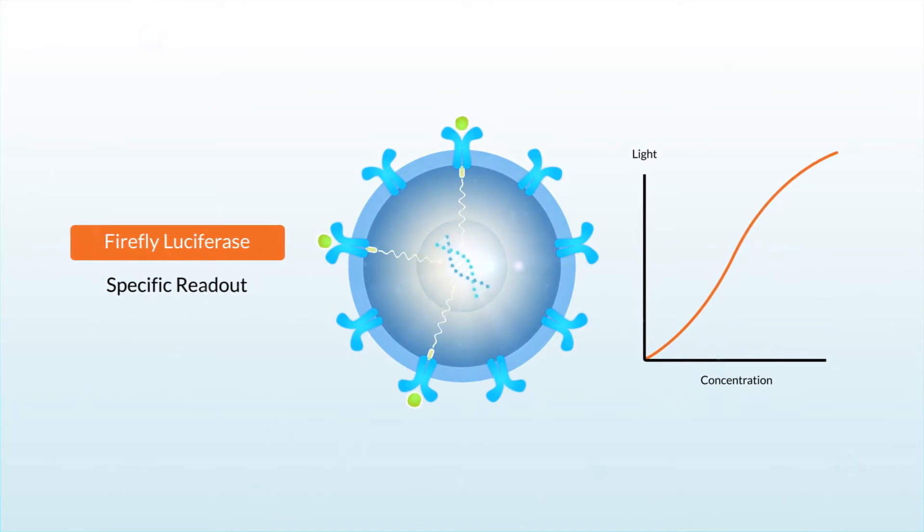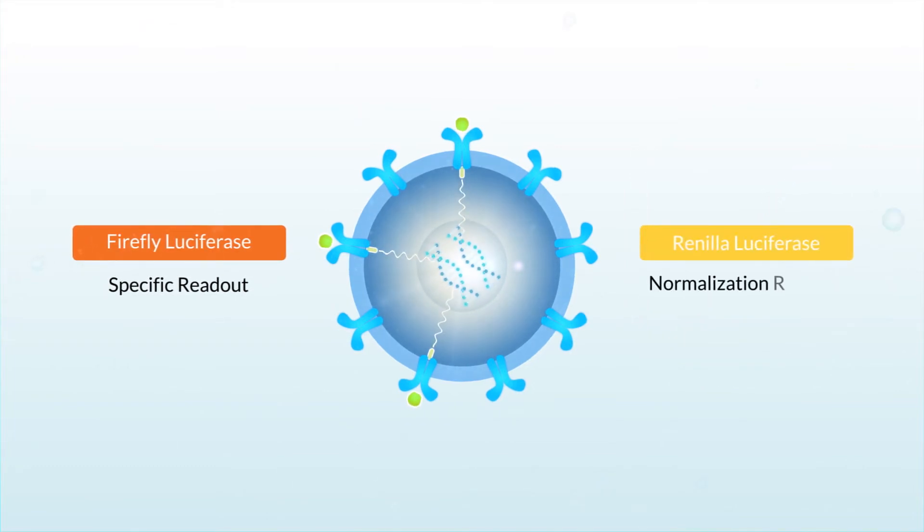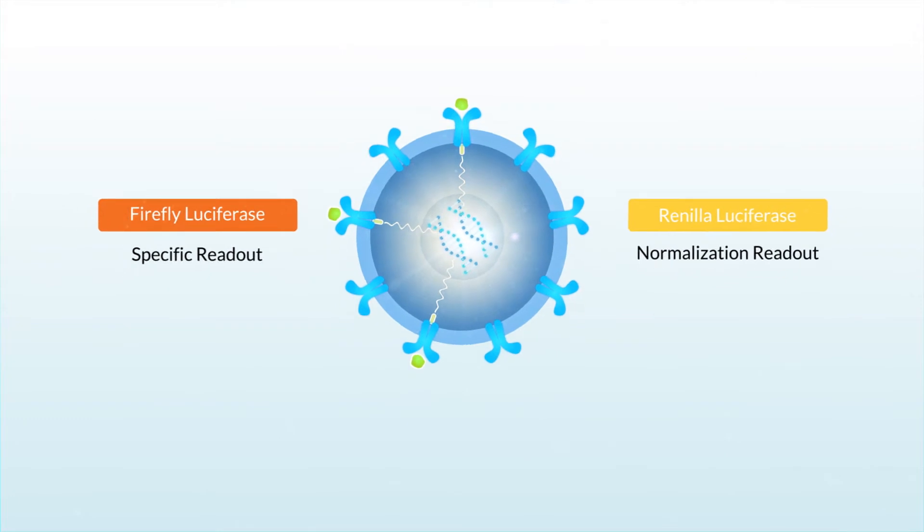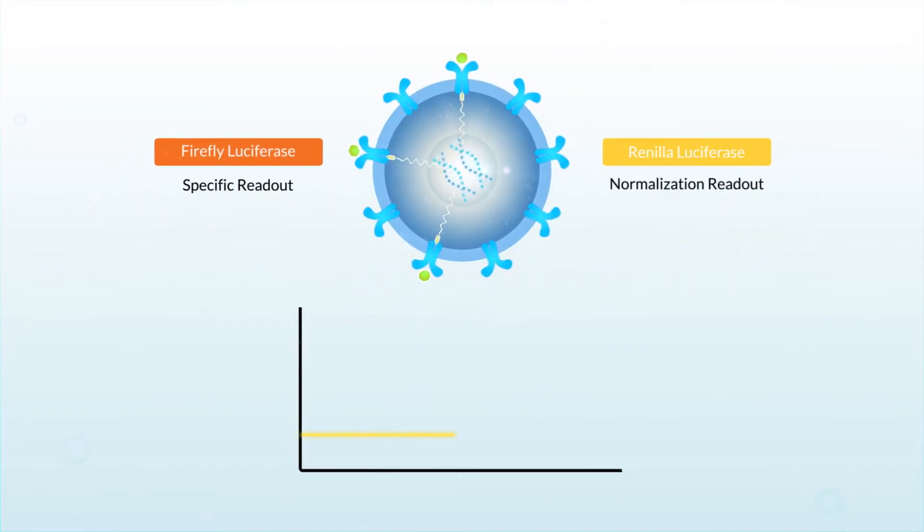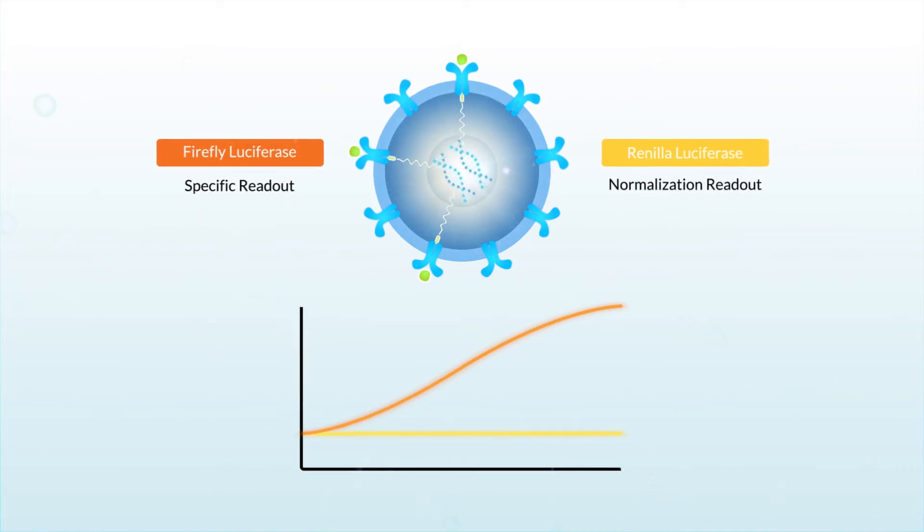A unique feature of iLite cells is that they contain a second reporter gene, a normalization gene. This gene can be used to measure signal background, so you get accurate results even when there are differences in cell number and cell viability between assays.